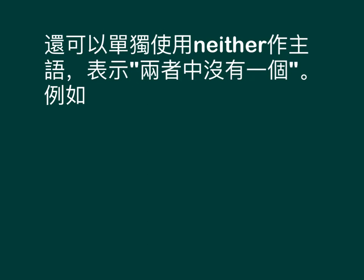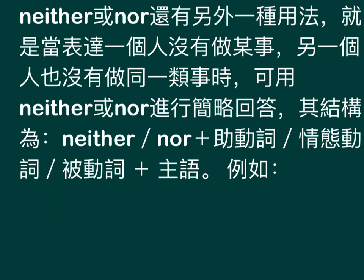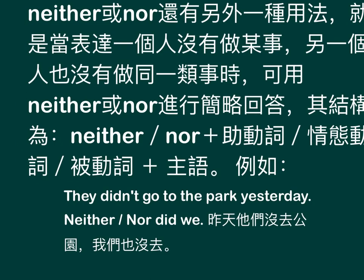We can also use 'neither' alone as a subject, meaning 'neither of the two'. For example: Neither of them likes football — 他们两个都不喜欢足球. Neither/nor has another usage: when expressing that one person didn't do something and neither did another, we can use neither/nor for a short response. The structure is: Neither/nor + auxiliary verb / modal verb / be verb + subject. For example: They didn't go to the park yesterday. Neither/nor did we — 昨天他们没有去公园，我们也没有去.